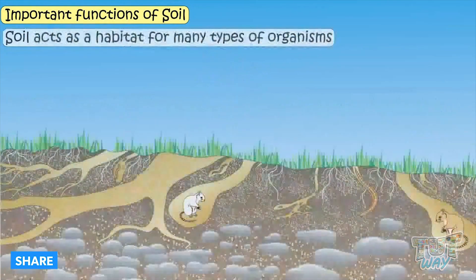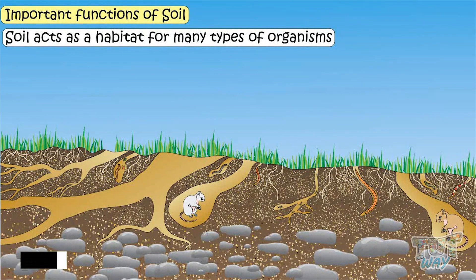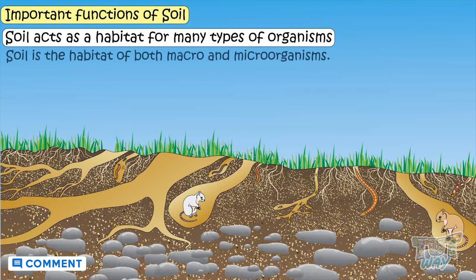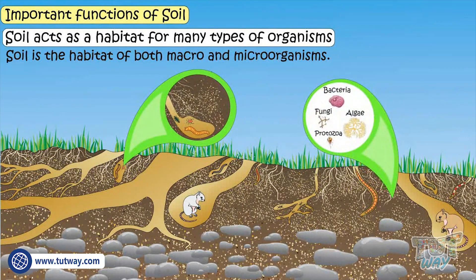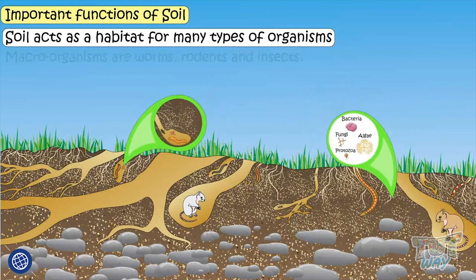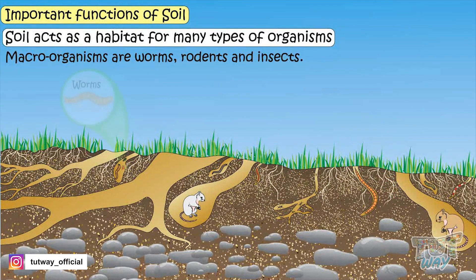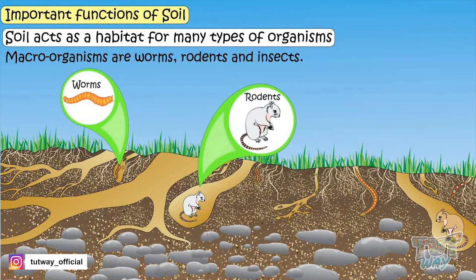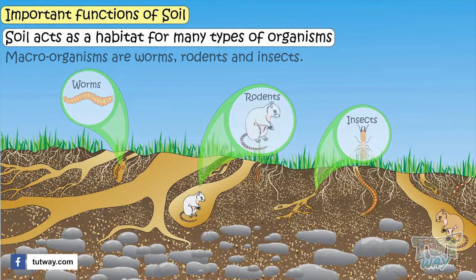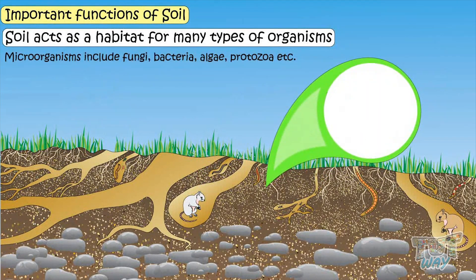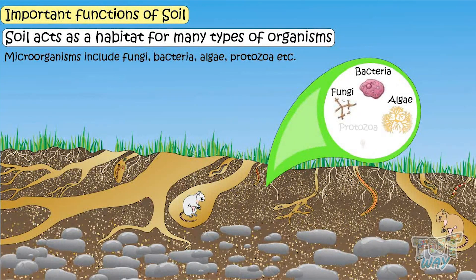Soil also acts as a habitat for many types of organisms. Soil is the habitat of both macro and micro organisms. Macro organisms include worms, rodents, and insects, while microorganisms include fungi, bacteria, algae, and protozoa. These macro and micro organisms are very important.